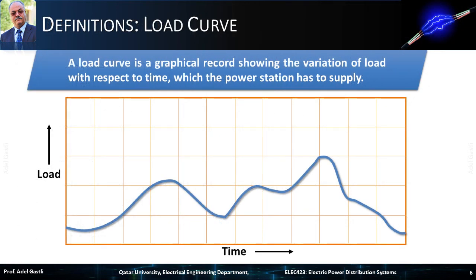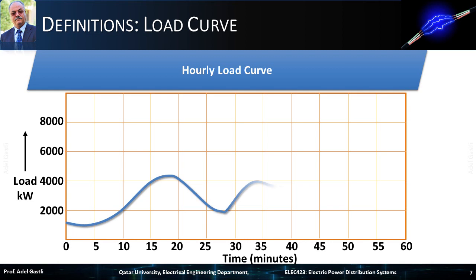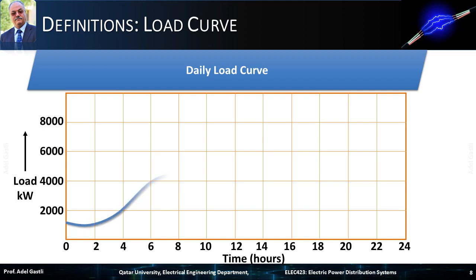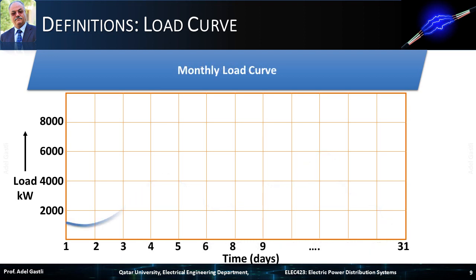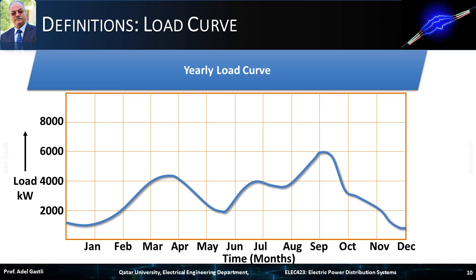A load curve is a graphical record showing the variation of load with respect to time, which the power station has to supply. A curve depicting the load consumed during an hour is called an hourly load curve. A load curve depicting the load consumed in 24 hours is called a daily load curve. If it displays load consumed in one month, it is called a monthly load curve, and if in one year, a yearly load curve.